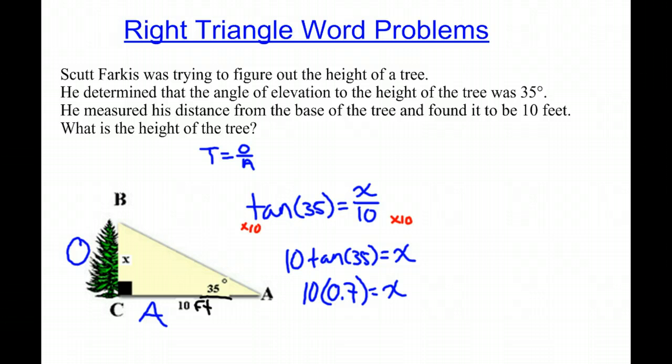So when we multiply these, we get X is equal to 7 feet. So our answer to the question, what is the height of the tree, is going to equal 7 feet.